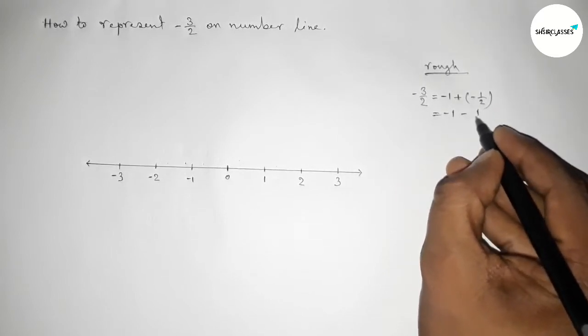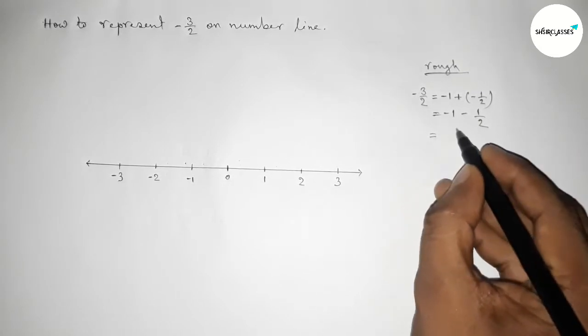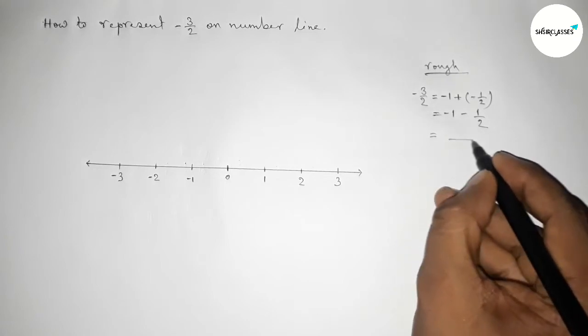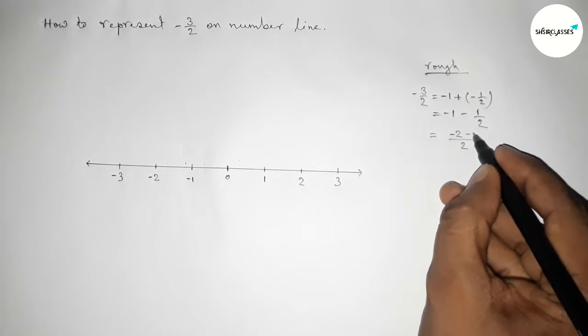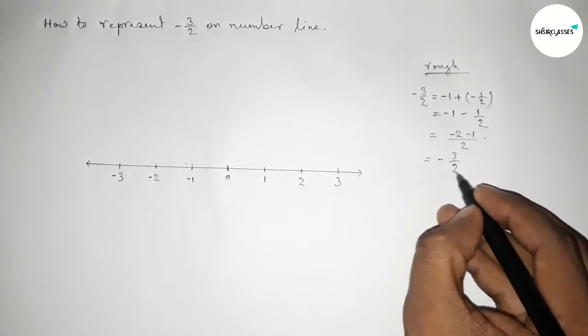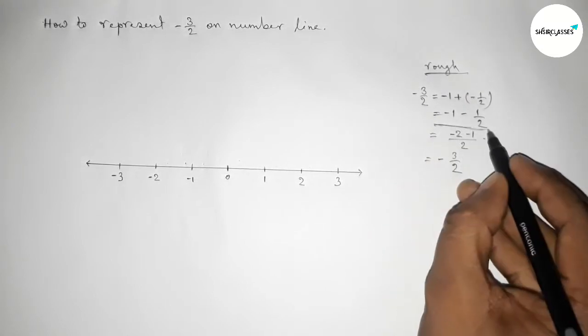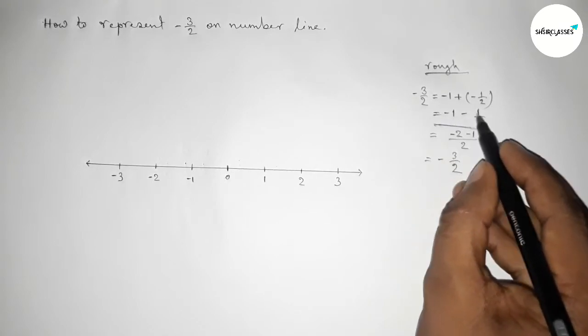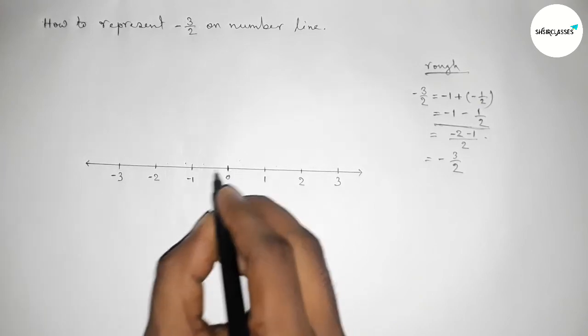Minus three by two, so we can write minus three by two. So this is minus one minus one by two. Now verifying this, so LCM 2 and simplifying this, so this is minus three by two. And this and this are equal. So we can write minus one minus one and minus one by two. So first counting minus one...